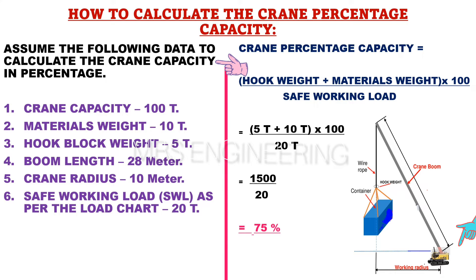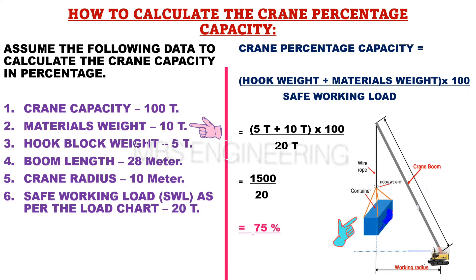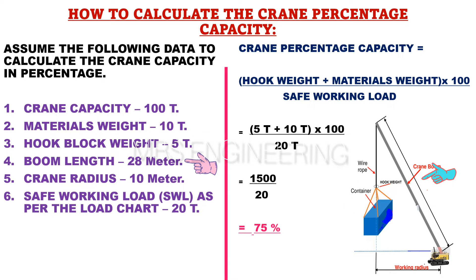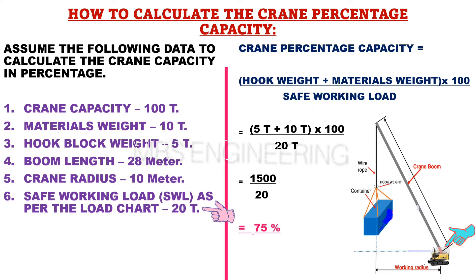Now we will work through a calculation example. The given data are: crane capacity 100 ton, materials weight 10 ton, hook block weight 5 ton, boom length 28 meters, crane radius 10 meters, and the safe working load (SWL) as per the load chart is 20 ton.